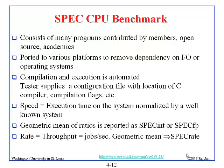Spec int is computed by running many benchmarks or applications and taking the geometric mean of those ratios to report as spec int. Spec fp is the floating point version — you run floating point applications, take the ratios, and report the number as spec fp. They also have something called spec rate, which is basically throughput — you measure jobs per second, take the ratio with the standard system, and then take the geometric mean of those ratios to get the throughput ratio.